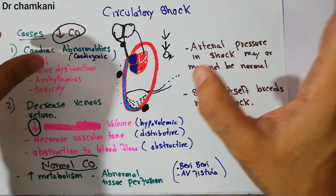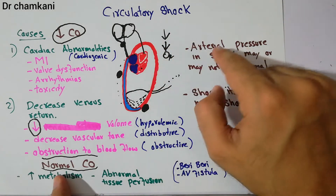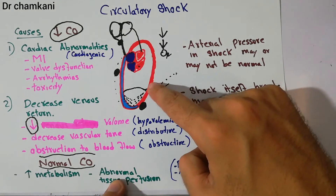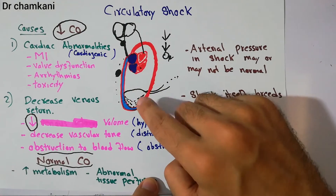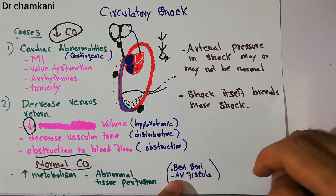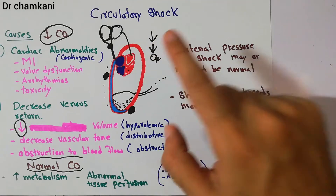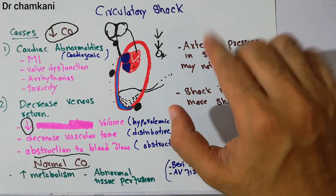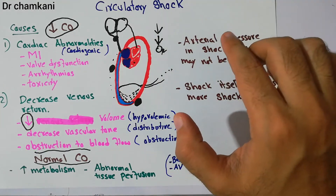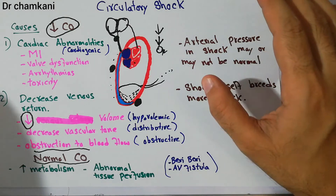For example, in high metabolism circulatory shock, the arterial pressure may be normal because the shock is not due to decreased blood pressure but due to high demand that the circulatory system cannot fulfill. Similarly, in abnormal tissue perfusion or AV fistula, there will be normal arterial pressure but some organs are not receiving blood. In beriberi, nutrients cannot be utilized at tissue level. So arterial pressure is not necessarily low in shock — compensatory mechanisms may keep it normal even while the patient is in a state of shock.